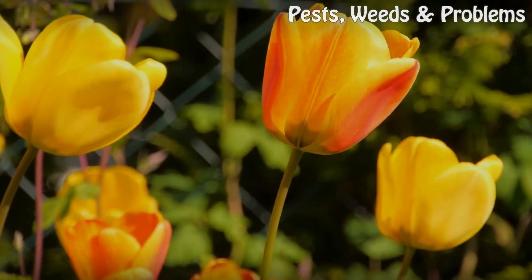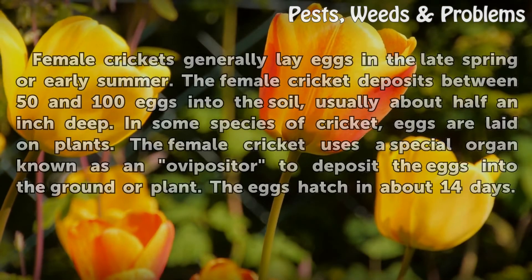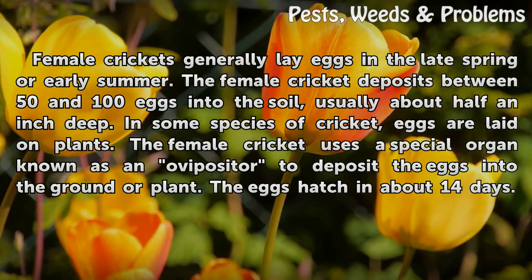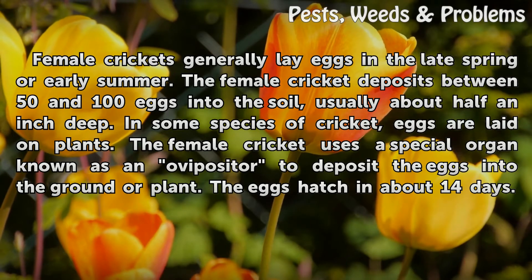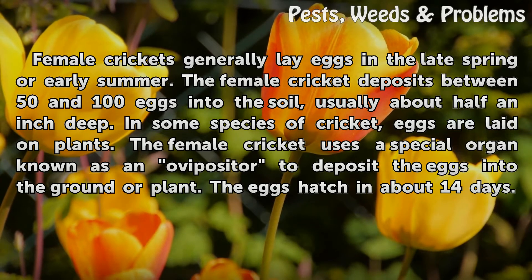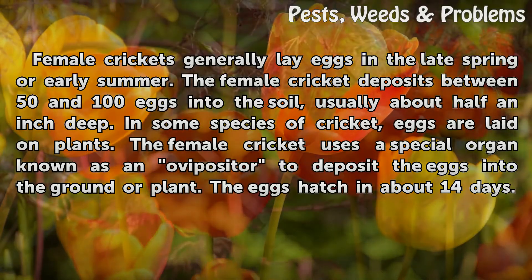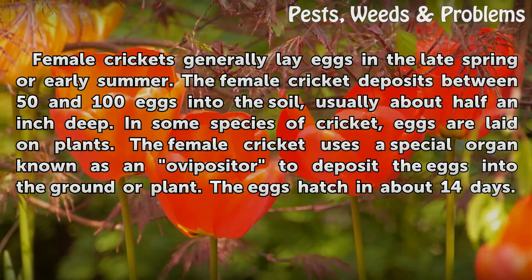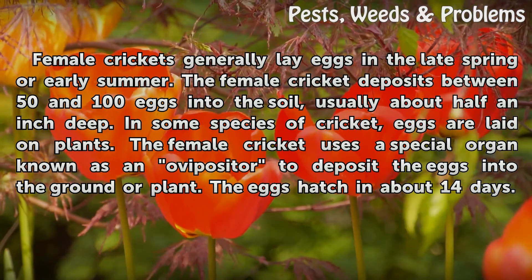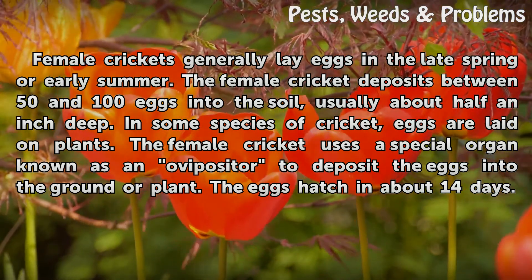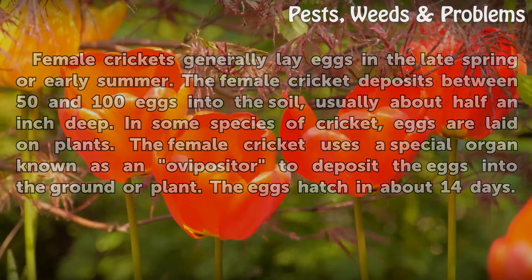Eggs. Female crickets generally lay eggs in the late spring or early summer. The female cricket deposits between 50 and 100 eggs into the soil, usually about half an inch deep. In some species, eggs are laid on plants. The female cricket uses a special organ known as an ovipositor to deposit the eggs into the ground or plant. The eggs hatch in about 14 days.